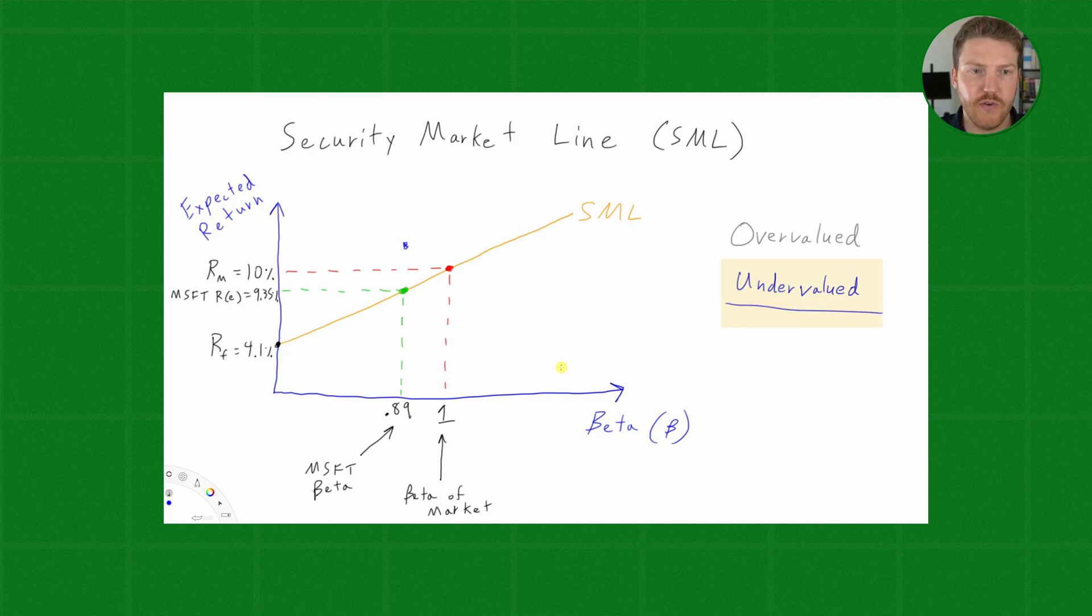And we can make a unifying theory that any portfolios or securities that plot above the security market line are actually undervalued.